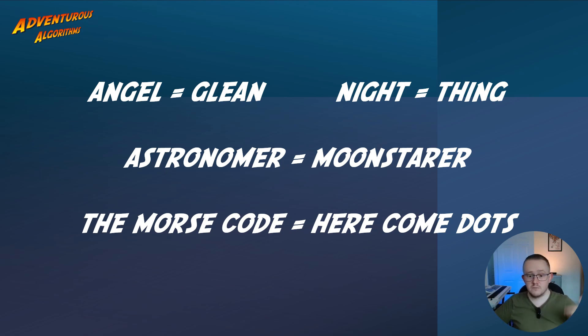For example, angel is the same letters as glean, but in a different order. Night is the same as thing. Astronomer could be moon starer. The morse code equals here come dots. The same letters rearranged in a different order, or really, because I'm doing computing, I should talk about the same characters.